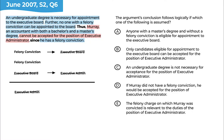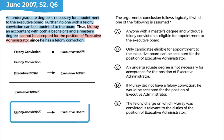Let's start with answer choice A. We're looking for the idea connecting 'not being appointed to the executive board' and 'not being an executive administrator.' Answer choice A says that anyone with a master's degree and without a felony conviction is eligible for appointment to the executive board. The thrust is: if you don't have a felony conviction, then you're eligible for appointment to the executive board. This simply negates the relationship in the second premise — it's a reversal — so we can get rid of answer choice A.